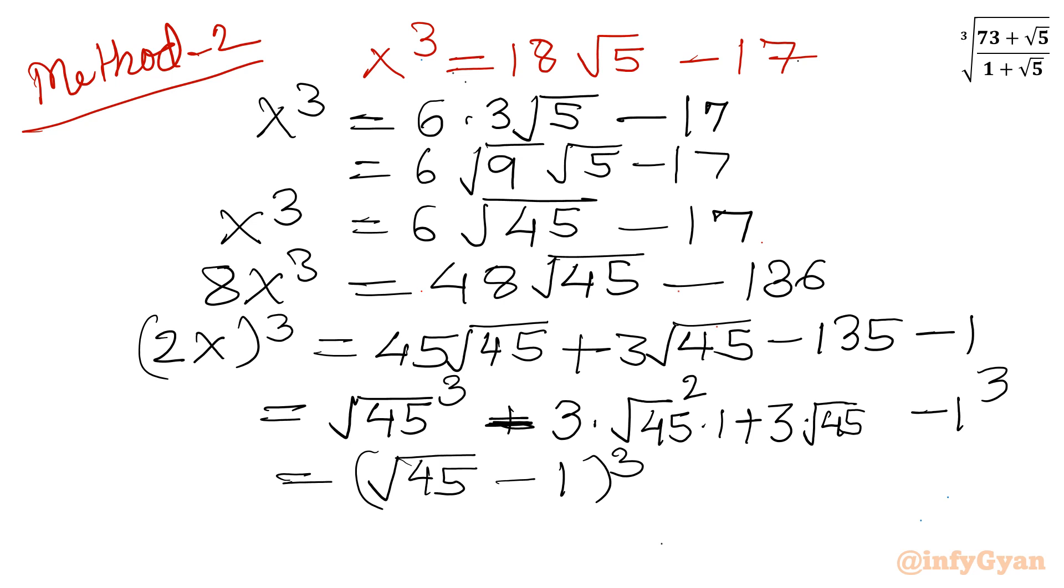Left hand side we have 2x cube. Let's consider cube root both sides. So we can write 2x will be equal to root 45 minus 1. Dividing both sides by 2, we get x equals root 45 minus 1 over 2.